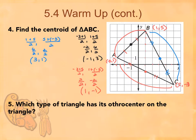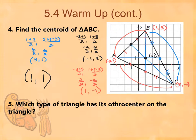So then carefully — and you can do this easier on your notability since it's a bit more accurate — you just want to connect those points. So I want to go from vertex to opposite side, vertex to opposite side, and vertex to opposite side. Where they meet is that point one, one. Sometimes they will appear more obvious than others. You want to make sure that you're finding that midpoint, because eyeballing a midpoint could lead to something totally wrong.